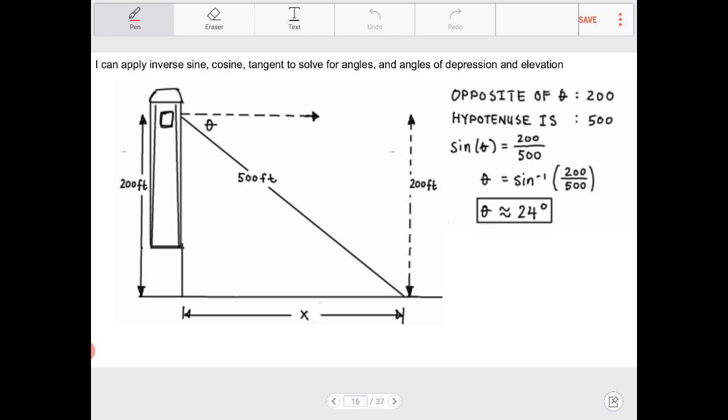However, that wasn't the only thing that we needed to find. We also needed to find out how far away is the beam of light away from the foot of the lighthouse. So we're going to use Pythagorean theorem to help us with this. So I know that x squared plus 200 squared is equal to 500 squared. Subtract both sides by 500 squared. And take the square root. I end up with x is approximately equal to 458.